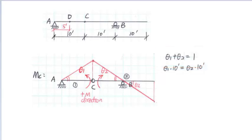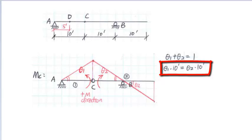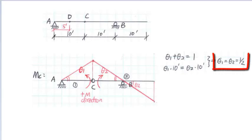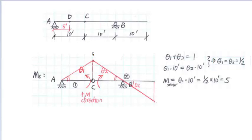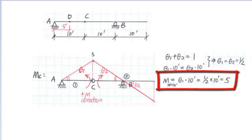At hinge C, segment AC and segment CB have the same vertical displacement, and therefore we get θ1 times 10 feet equals θ2 times 10 feet. Combining the two equations, we can solve for θ1 equals 0.5 and θ2 equals 0.5. Then we can get the moment at x equal to 10 feet: m equals θ1 times 10 feet equals 0.5 times 10 feet equals 5 feet.